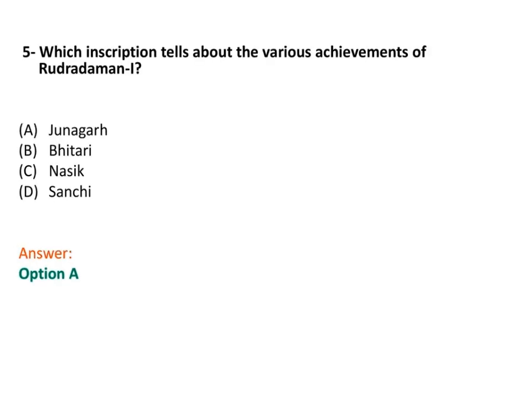Now the next question: Which inscription tells about the various achievements of Rudra Dhaman I? The answer is option A — the Junagar inscription tells about the various achievements of Rudra Dhaman I. This inscription also mentions that the famous Sudarshan lake was constructed by Pushyagupta.